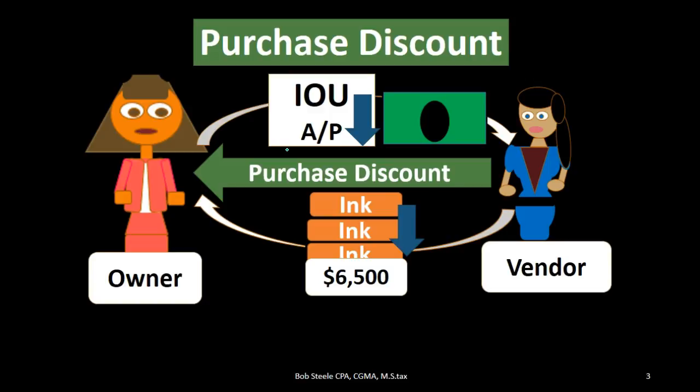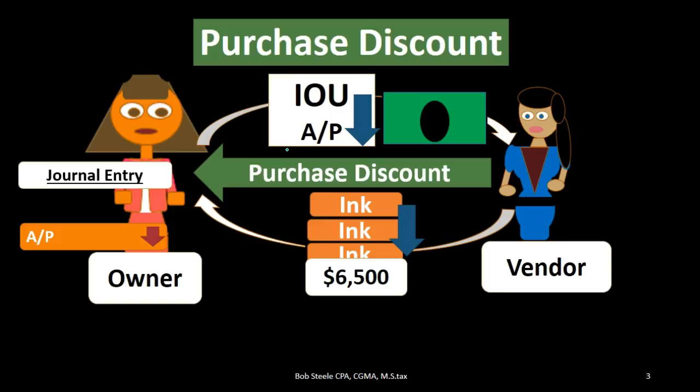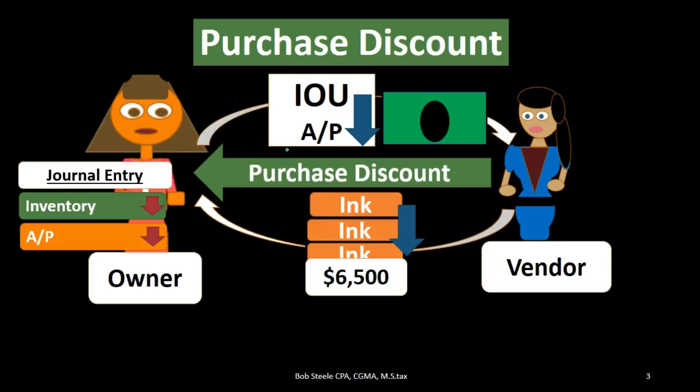The place where many people get mixed up is the other side of the transaction: inventory is going to go down. The reason is that we put the inventory on the books at the full price, but we're not going to pay the full price, so that inventory is overstated. We've got to reduce the amount of inventory by the discount we received. It's not going on the income statement yet because we haven't recorded anything there — it will be recorded when we sell the inventory in the form of cost of goods sold. The journal entry is: accounts payable decreases and inventory goes down.